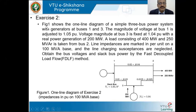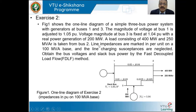This is the numerical which we had already considered to solve with the Newton-Raphson method. The figure shows a one-line diagram of a simple three-bus power system with generators at buses 1 and 3. The magnitude of voltage at bus 1 is adjusted to 1.05 at angle 0. Voltage magnitude at bus 3 is fixed at 1.04 with real power generation of 200 MW. The base MVA is 100 MVA, so 200 MW equals 2 per unit. A load of 400 MW (4 per unit) and 250 MVAR (2.5 per unit) is taken from bus 2. Line impedances are marked in per unit on a 100 MVA base and line charging susceptances are neglected. The objective is to obtain bus voltages and slack bus power using the fast decoupled load flow method.